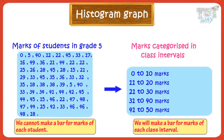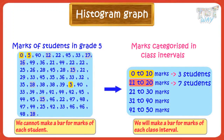Now let's answer a few questions. How many students have marks in the range of 0 to 10? There are only 3 students in the range of 0 to 10. Similarly, count how many students got marks in the range of 11 to 20 — there are 7 students. Similarly, count for all categories.